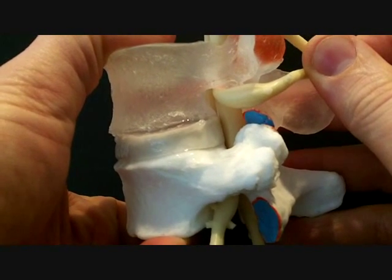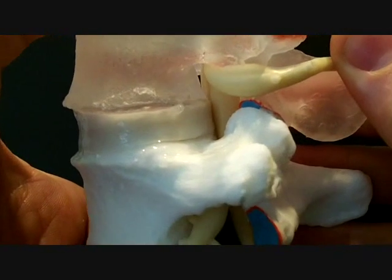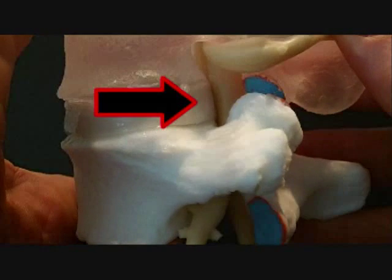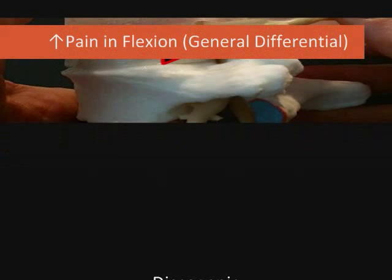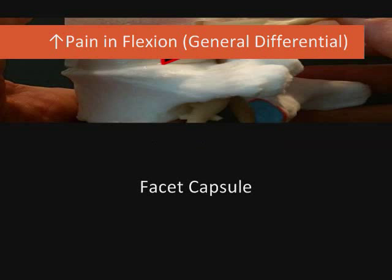When patients undergo flexion and have back or leg pain, there are several areas that could possibly be causing the pain. Primarily discogenic, it could be the facet capsule, or it could be relative instability. This is a general differential.